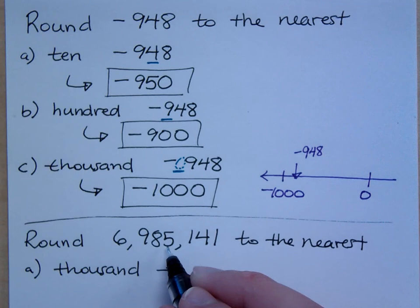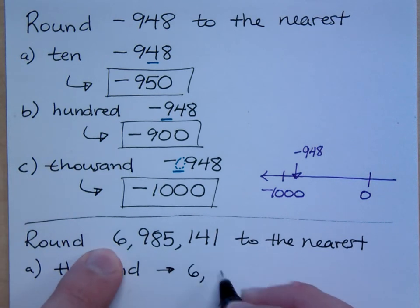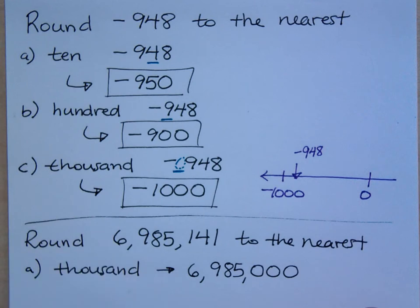It's going to round down, right? But I'm going to keep everything else here, so I have 6,985,000, like that, right?